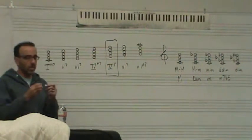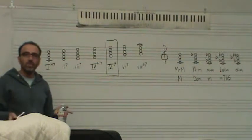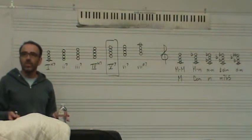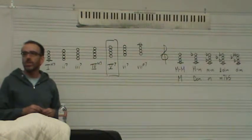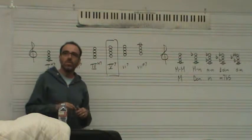And again, if you really need to be specific, you would say it's a minor minor seventh. But more often than not, you can just say a minor seventh chord, and anybody will understand what you say. If you say minor seventh chord.